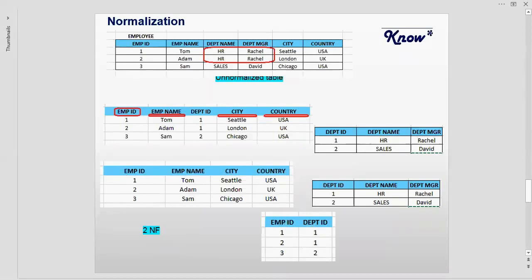Now if I want to see the employee name and department name of the employee whose ID is one, I go to the relationship table and search for the record with employee ID one. I identify the department ID, which is one. To get the employee name, I go to the employee table; to get the department name, I take the department ID and go to the department table. So this is how these three tables are linked — and this is the second normal form.